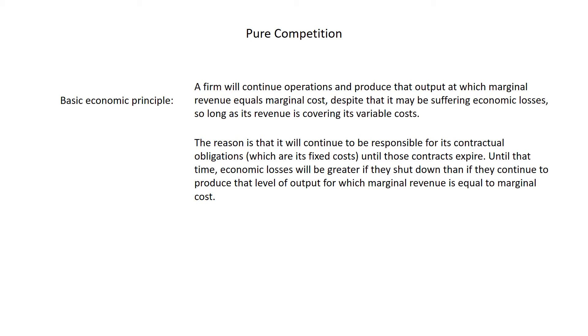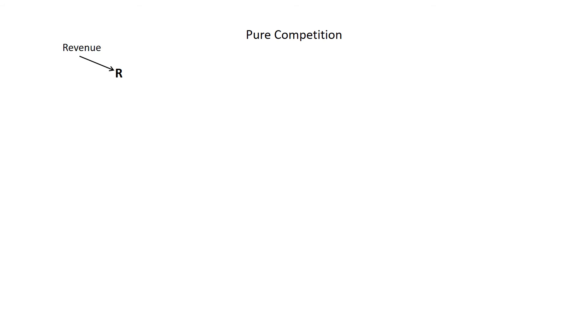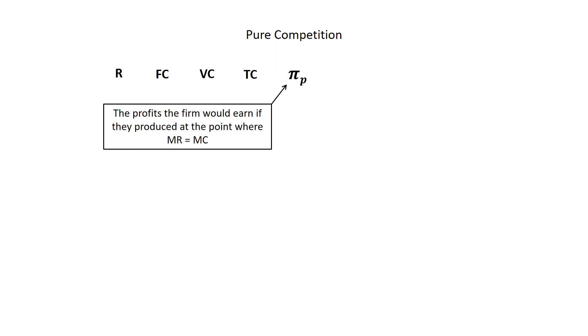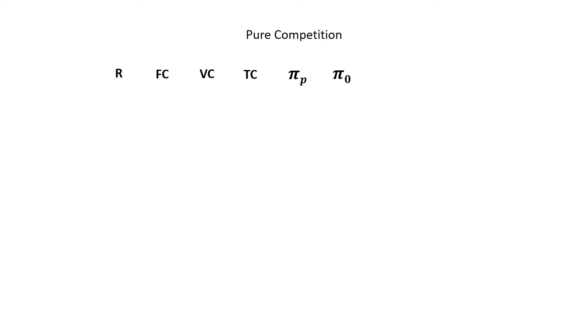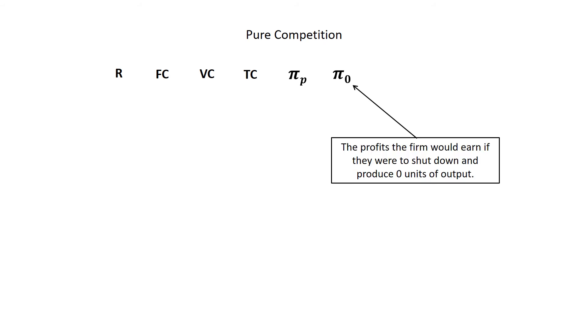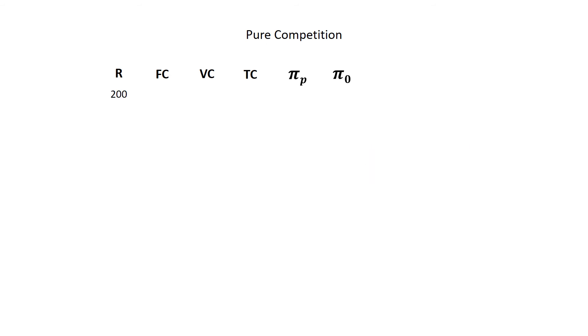Let's see why this is the case by use of a table. We have columns for revenue (R), fixed costs (FC), variable costs (VC), total costs (TC), profits if the firm produces at MR=MC (PI sub P), and profits if it shuts down and produces zero units (PI sub 0). Suppose revenue is $200, fixed costs are $100, and variable costs are $50, making total costs $150. Profits — revenue minus total cost — will be $50. But if the firm does not produce, revenue is $0 and variable costs are $0, but fixed costs remain until contractual obligations expire, so total costs equal fixed costs and losses would be $100.